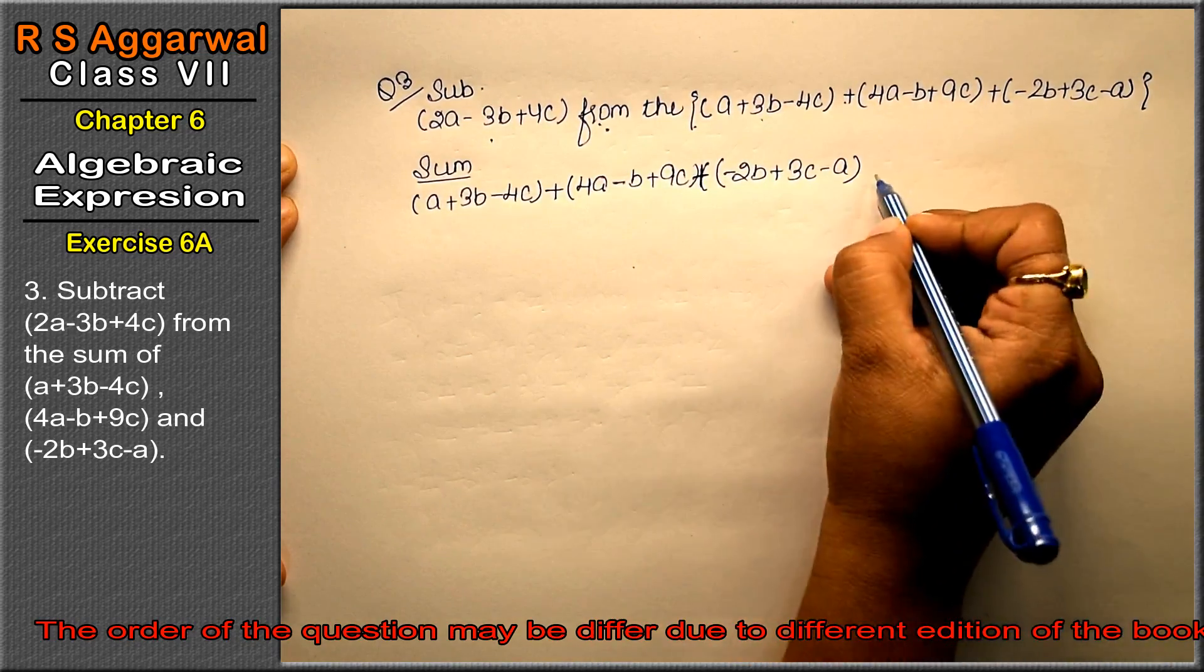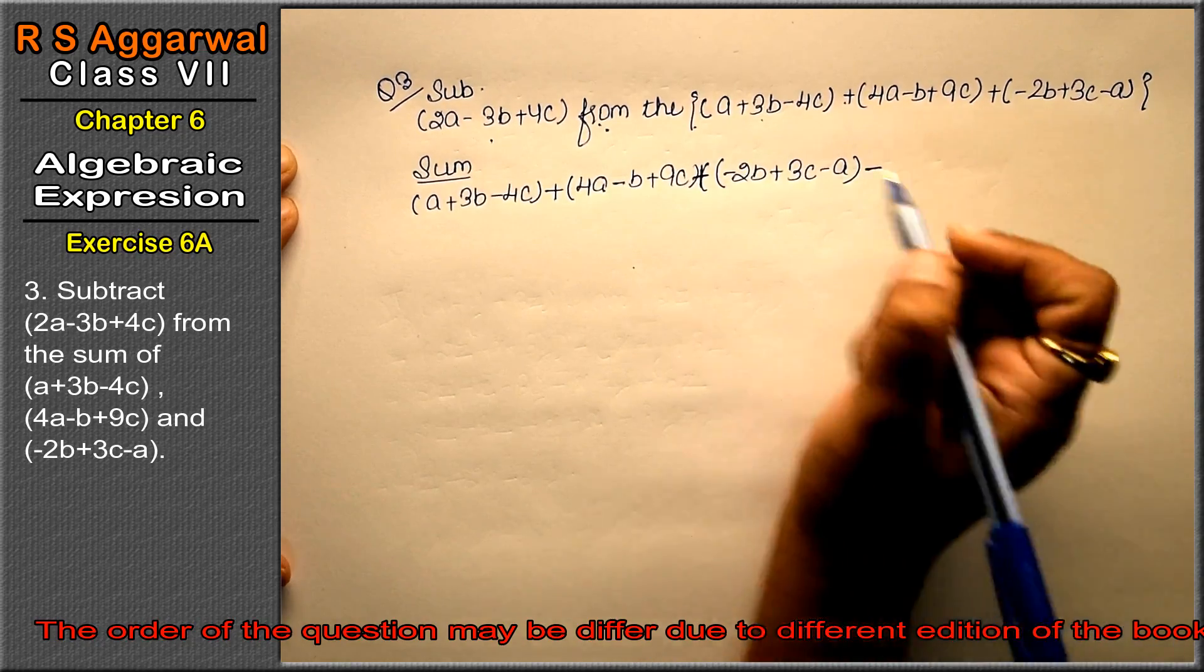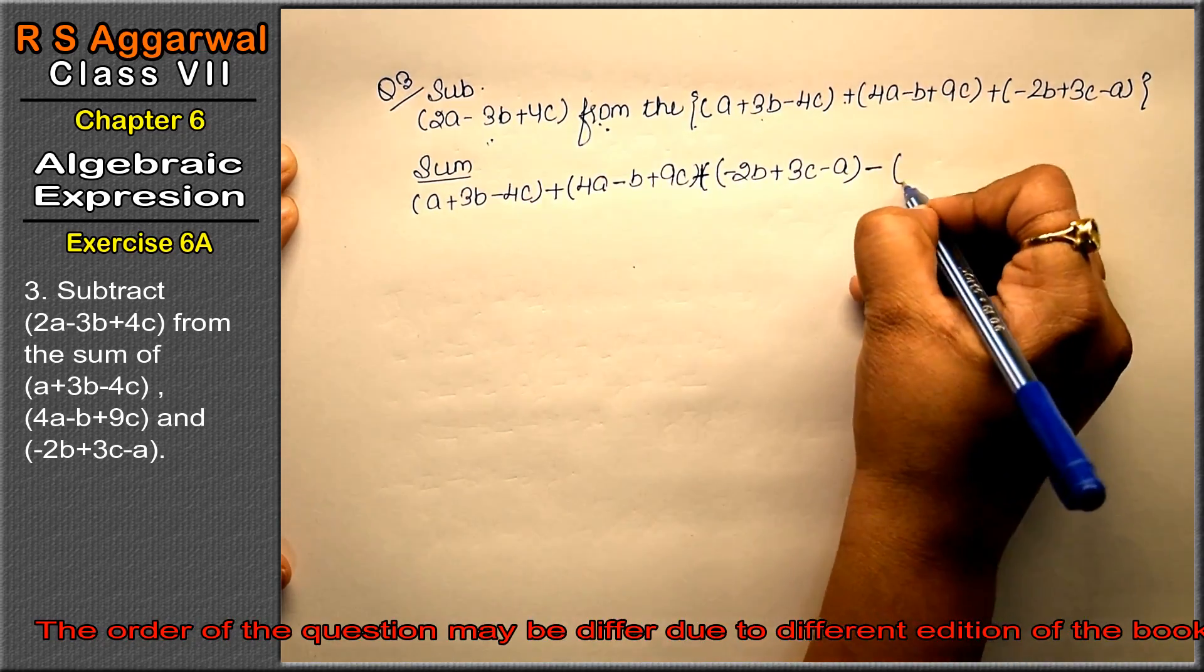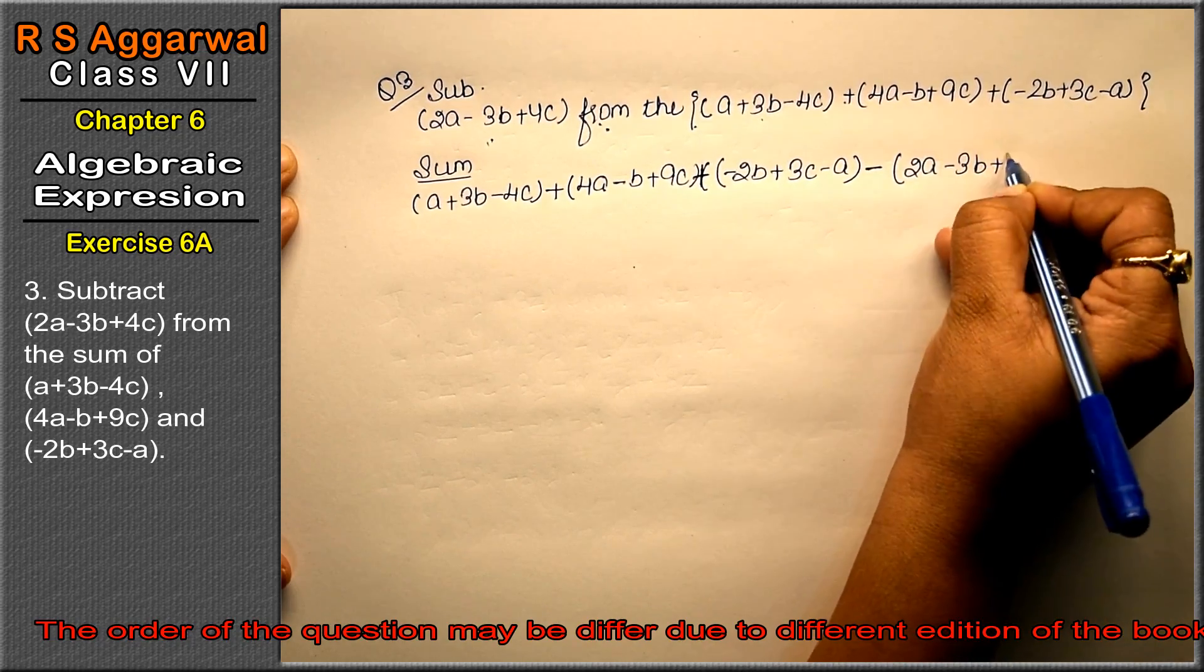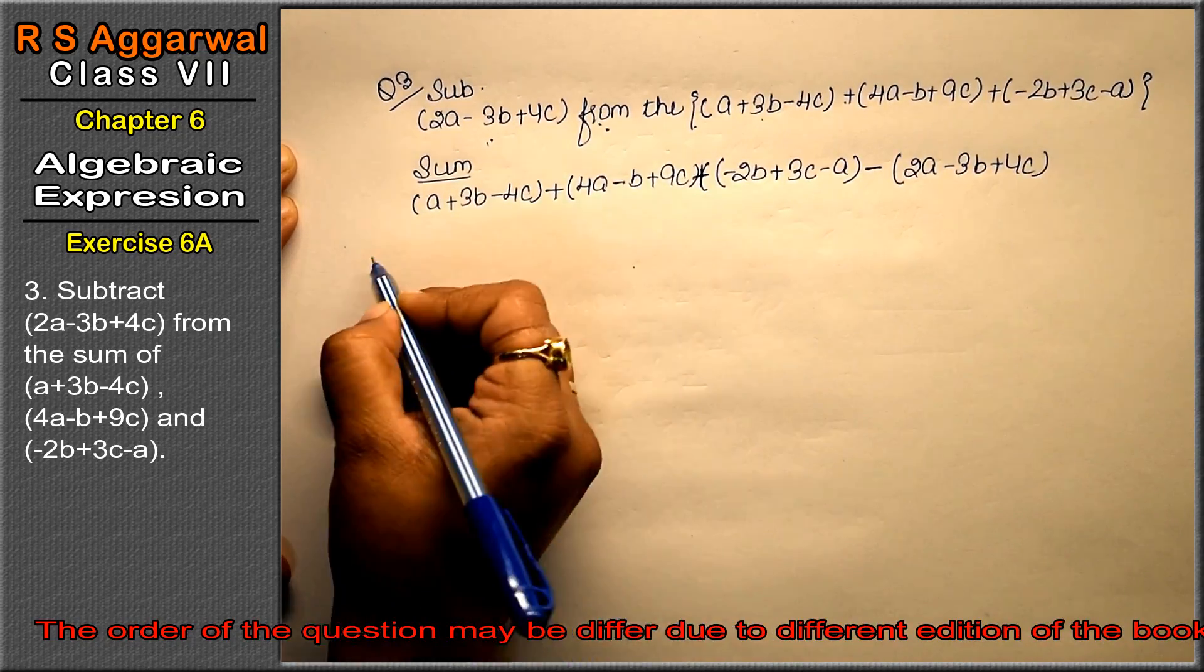We had to subtract. Then minus, and the expression after 'from': 2a minus 3b plus 4c, right friends?